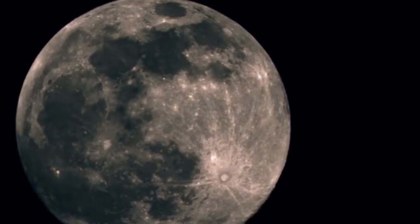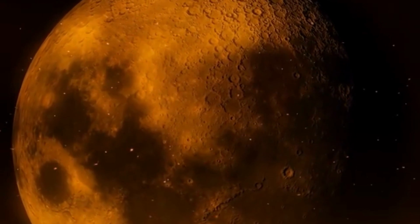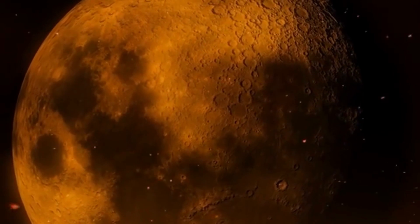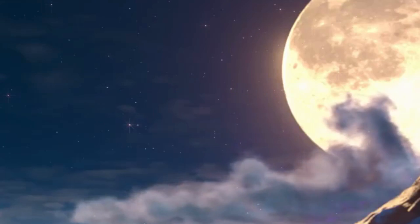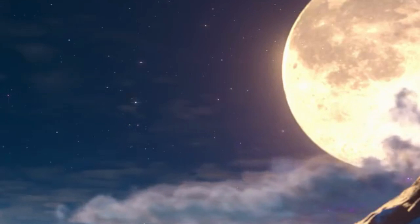11. The temperature on the Moon can vary drastically, ranging from extremely hot during the day, 127 degrees Celsius, to extremely cold at night, minus 173 degrees Celsius.